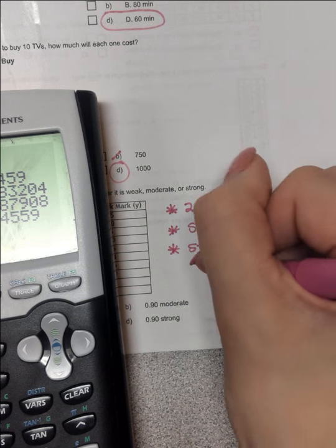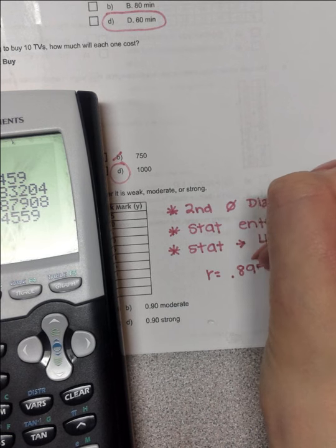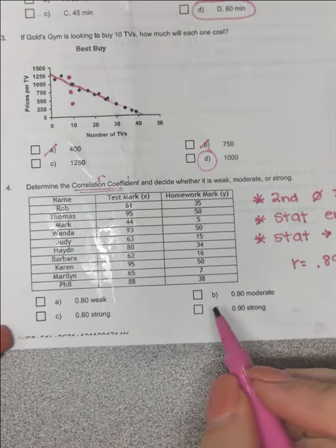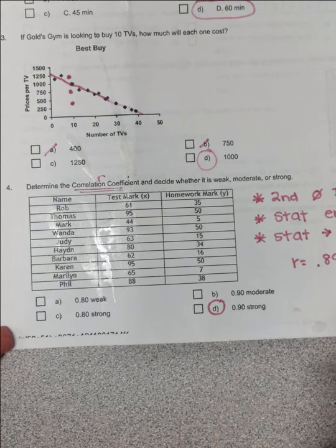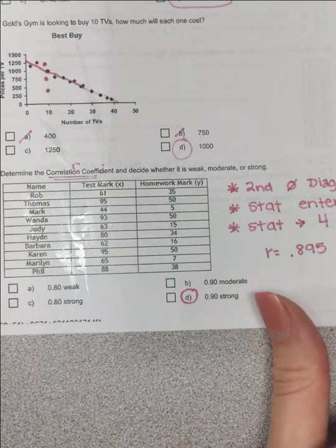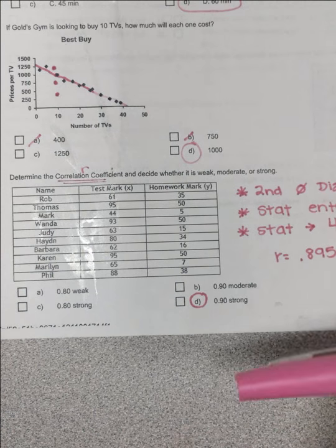So my R value is .895. So based off that R value, it would be this .9, and that is really close to 1, so that is strong. And is that positive or negative? That is positive.